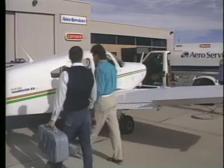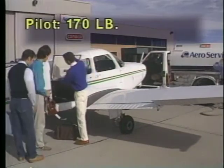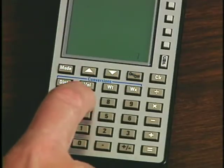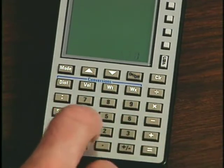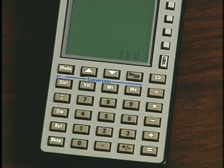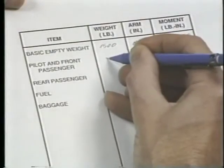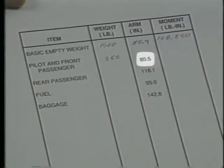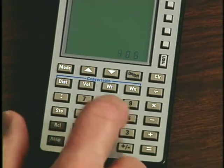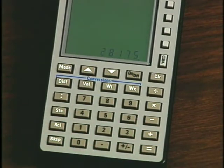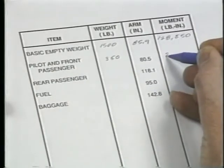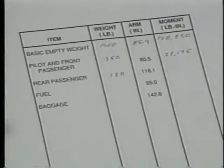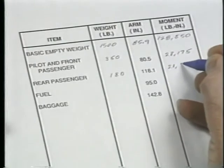As a sample problem, assume you weigh 170 pounds and you're going to be carrying two passengers who each weigh 180 pounds. Since one of the passengers will be sitting in the co-pilot seat, you need to add your weight to that of the passenger. The result is 350 pounds. Since the arm for the pilot and front seat passenger is 80.5 inches aft of datum, the moment is 28,175 pound-inches. The moment for the rear seat passenger is 21,258 pound-inches.